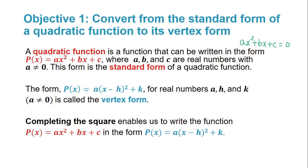The form p of x, which is equal to a times the quantity x minus h squared plus k, for real numbers a, h, and k with a not equal to 0, is called the vertex form of a quadratic function. We saw those in the introductory video, because this is a transformation of the graph of y equals x squared. It's called the vertex form because h and k can actually tell us the vertex just by sight, based on the rules of transformations.